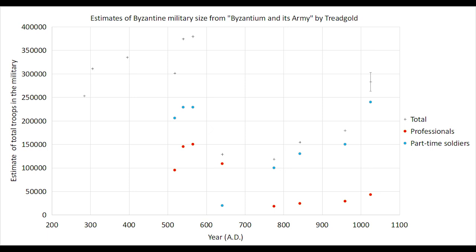From here the numbers fluctuate a bit, and irregulars get introduced as well as professionals, up to about 370,000 under Justinian, which is the highest data point. He's also the second highest data point as well. Justinian liked his wars, and whilst Anastasius before Justinian had saved a lot, Justinian spent a lot.